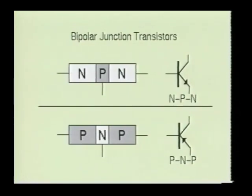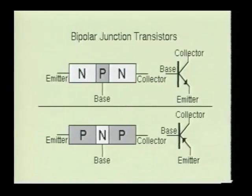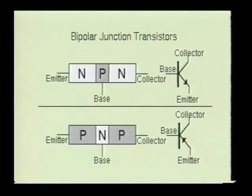In either case, there will be three leads attached to the device. One will be the emitter, one will be the base, and one will be the collector. The emitter lead is easily identified by the arrow placed on it. The arrow points in on the PNP, and it points out on the NPN transistor.